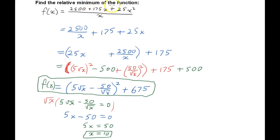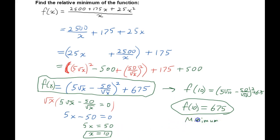If we evaluate, if we plug in 10 for x here, we will get the same result because we haven't changed the function, we've just changed what it looks like. So I will say then the function f of 10 equals 5 square roots of 10 minus 50 over the square root of 10 all squared plus 675. We already said that this whole thing is going to equal zero when x equals 10. That's what we just solved here. So we know that the function evaluated at x equals 10 is 675. So this is the minimum.